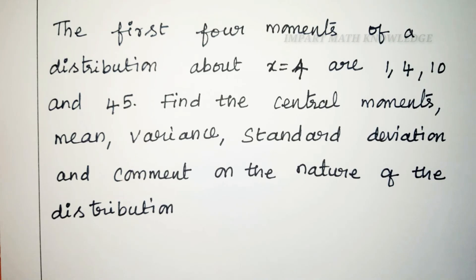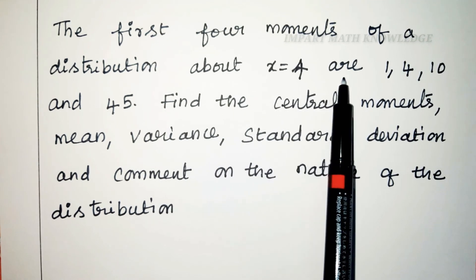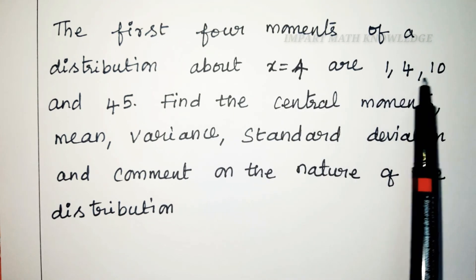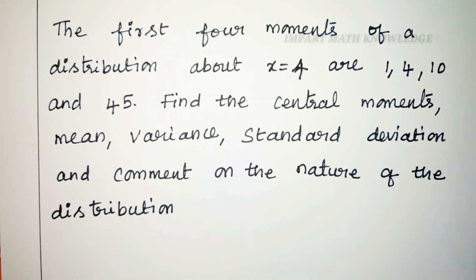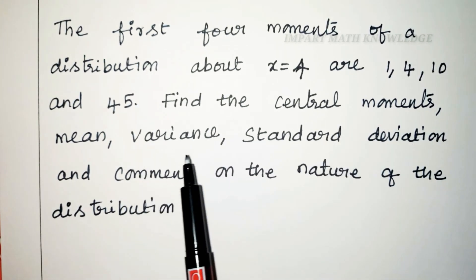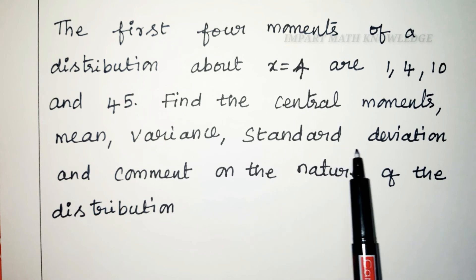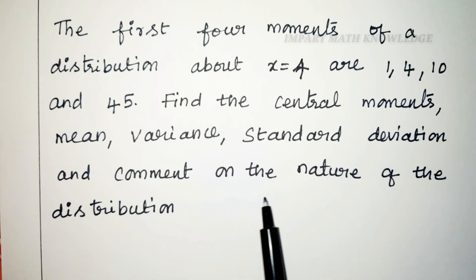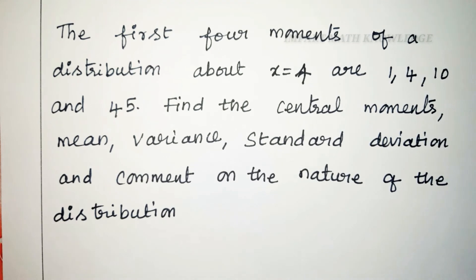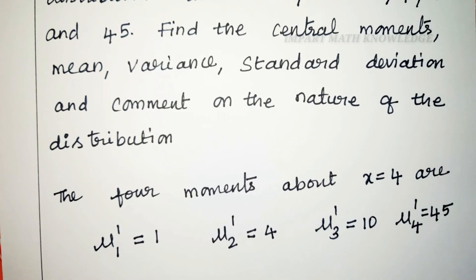Let me discuss the problem based on moments. The first four moments of a distribution about x equals 4 are 1, 4, 10, and 45. Find the central moments, mean, variance, standard deviation, and comment on the nature of the distribution. The given raw moments are: mu1 dash equals 1, mu2 dash equals 4, mu3 dash equals 10, mu4 dash equals 45.